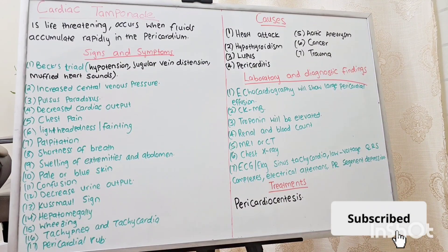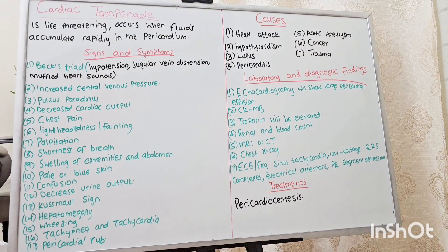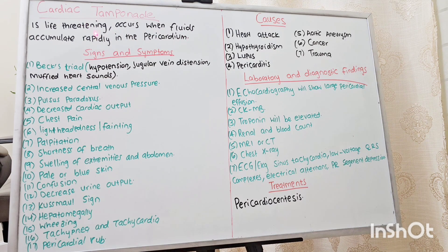Hello, welcome to my YouTube channel. If you're finding me for the first time, my name is Tuta Aki. Today we are going to talk about cardiac tamponade. Cardiac tamponade is a life-threatening condition that occurs when fluid accumulates rapidly in the pericardium. If you suspect cardiac tamponade, it's time to seek immediate medical attention or activate your emergency system.